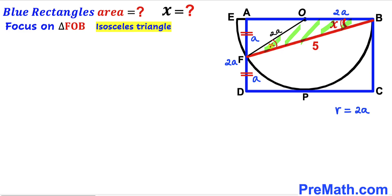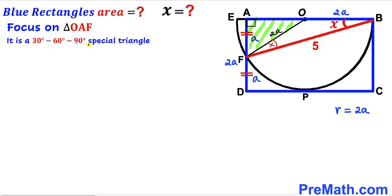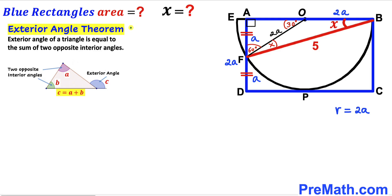Now let's focus on right triangle OAF. We can see that side AF is lowercase a and the hypotenuse is 2a — twice the smaller leg. We conclude that triangle OAF is a 30-60-90 special triangle. The angle opposite the smallest leg is 30 degrees, the next angle is 60 degrees, and the right angle is 90 degrees.